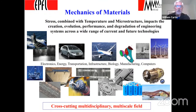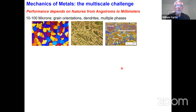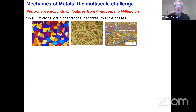When we look at metals in particular, the performance depends on features from the angstrom scale to the millimeter scale. A micrograph of the material shows it's polycrystalline—these are different grains of a metal. This is a cast material with dendritic structure, this is a dual phase steel with austenite and ferrite phases, all happening at the 10 to 100 micron scale. All this microstructure is important for performance. But in all these materials there are interfaces—grain boundaries and phase boundaries are atomistic.